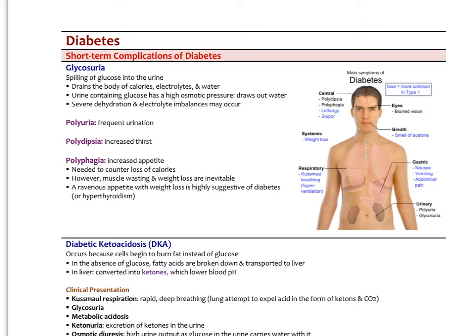The draining of glucose in the urine has an osmotic effect — it drains the body of electrolytes, pulls out water, and drains you of calories. This osmotic pressure is rapidly dehydrating, so severe dehydration and electrolyte imbalances can occur from glycosuria. This is where we typically see increased urination, increased thirst from fluid loss, polydipsia, and then increased appetite — polyphagia needed to counter the loss of all those calories.